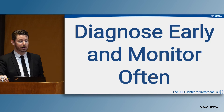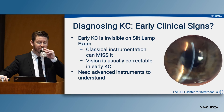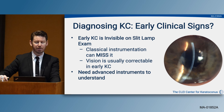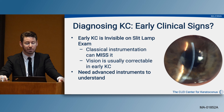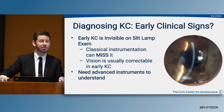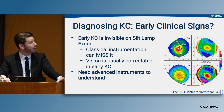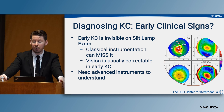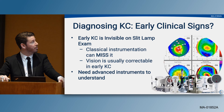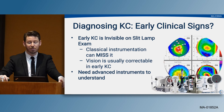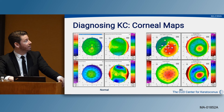We want to diagnose and monitor often. Early keratoconus is invisible on slit lamp exam — this individual does have keratoconus, but it's easy to miss, and vision is usually correctable in early keratoconus. We really need advanced diagnostic instruments to find those early findings. You can see the corneal tomography of that same individual, showing early keratoconic signs with the absence of slit lamp findings.